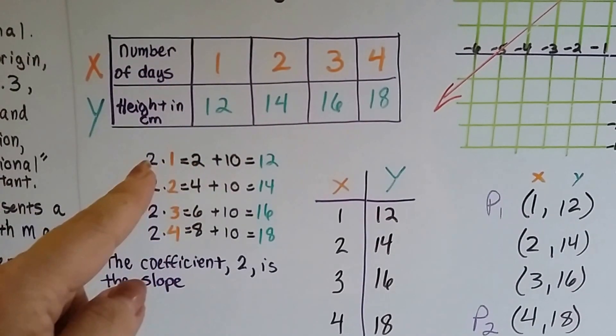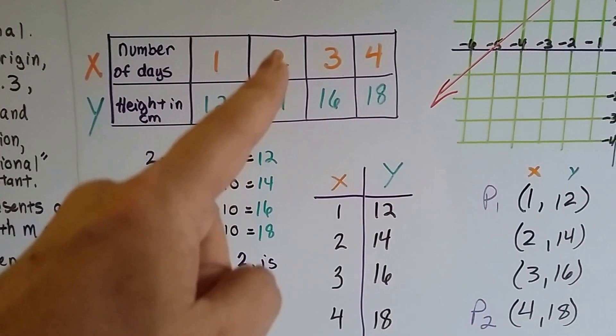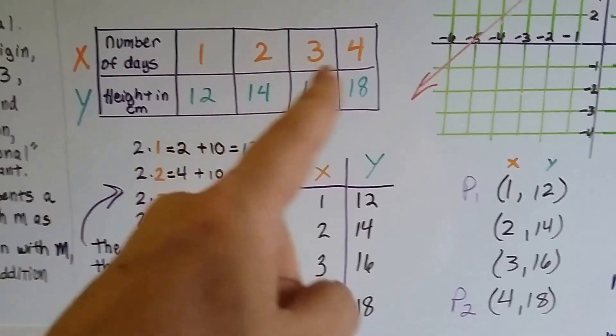So the first day we have 2 times 1 is 2 plus the 10, so it's 12. Then we have 2 times 2 is 4 plus 10 is 14. We fill in the rest of the table.